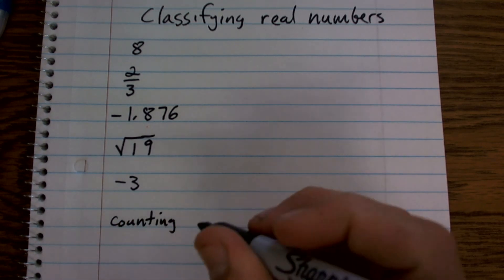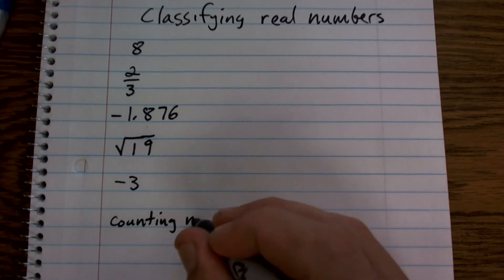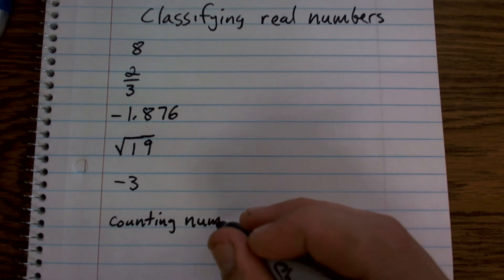And remember, those are just numbers like 1, 2, 3, 4, 5, 6, 7, 8, 9, 10. So we have our counting numbers.